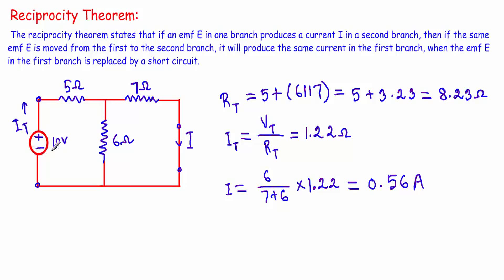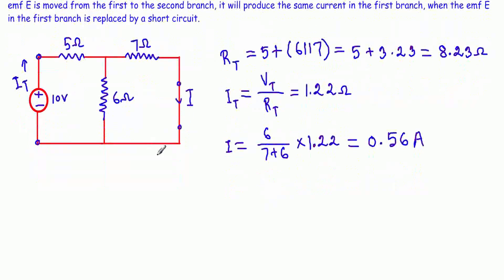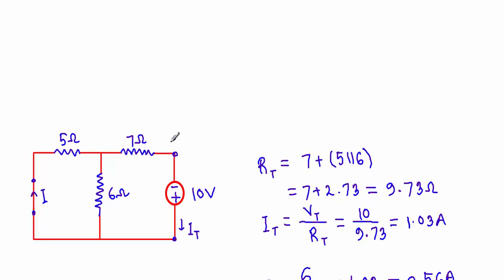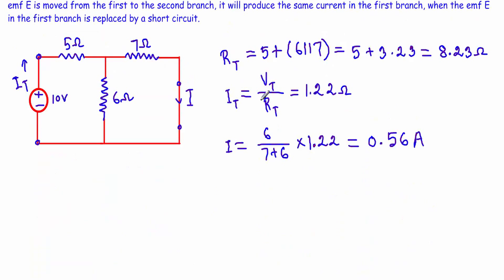Let me clarify the second portion of this theorem. In the first case, if we have an EMF acting at this branch and it produces a current here, then in the second case it states that if I move the voltage source to this position and measure the current through this path, and connect the previous position of the voltage source with a short circuit, then this current will be the same as the current in the first case. This is what the Reciprocity Theorem states.